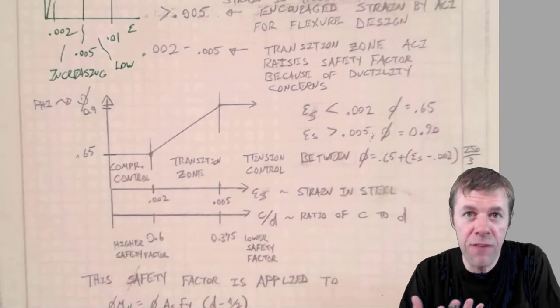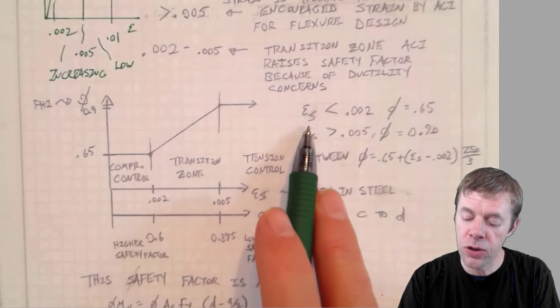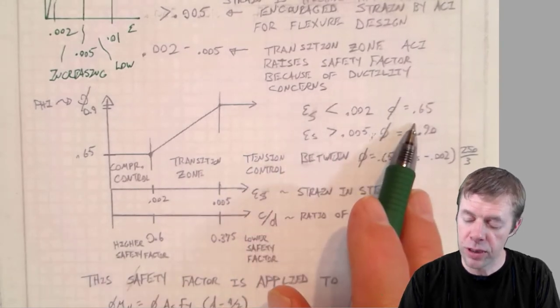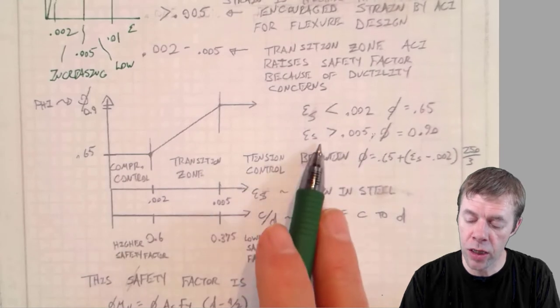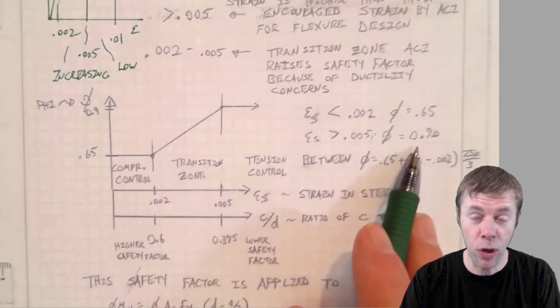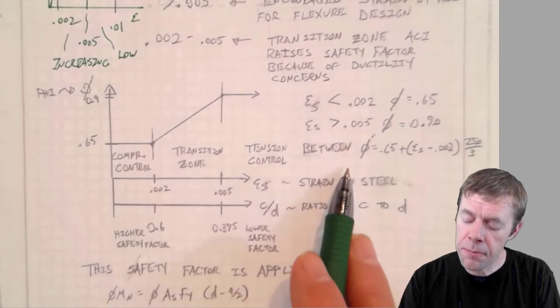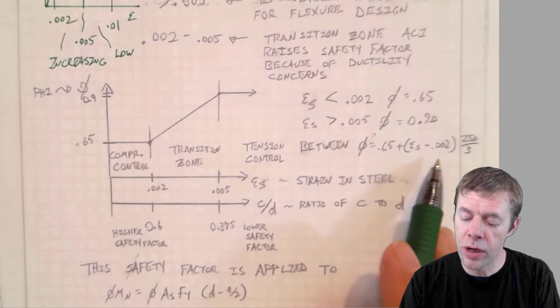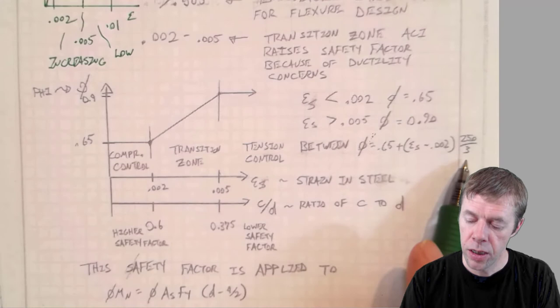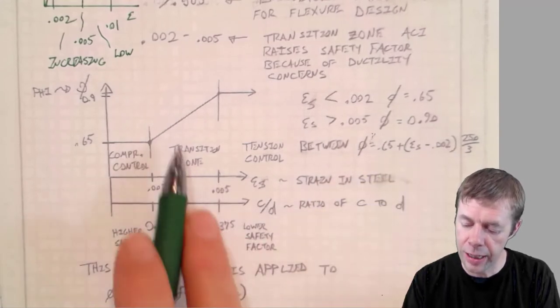If you don't like graphs, if you like equations, you can use an equation over here. When your strain in your steel is less than 0.002, you'll use a fee factor of 0.65. If your strain in your steel is greater than 0.005, you'll use a fee factor of 0.90. And this is where you want to be. And then in between, you're going to use this equation. All this equation is, is this line. There is the slope, or some version of the slope. This is just an equation for that line.